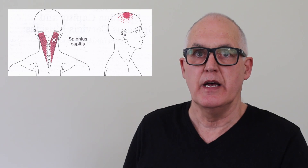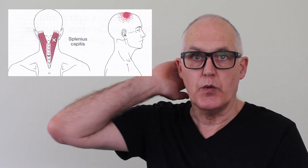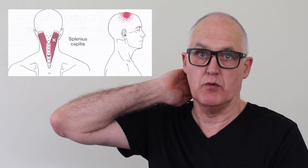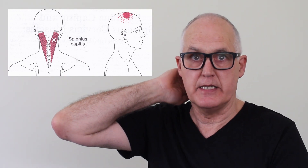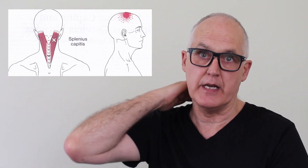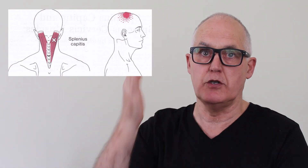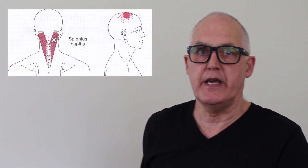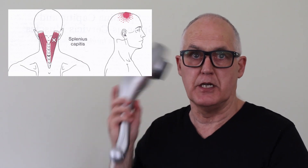As the diagram shows, the splenius capitis muscles are at the back of your neck, with the top being just above the suboccipital muscles. To examine them, use the flats of your fingers, and if you find any points you can use your fingers to apply pressure, or if you're careful you can use a vibration massager.